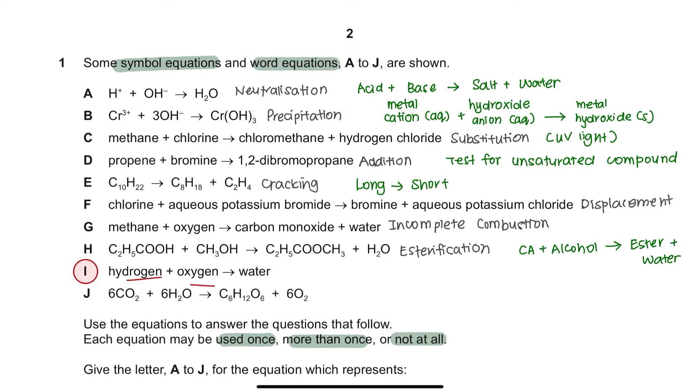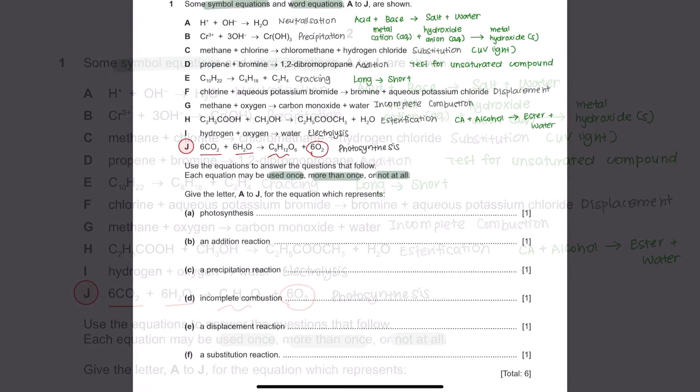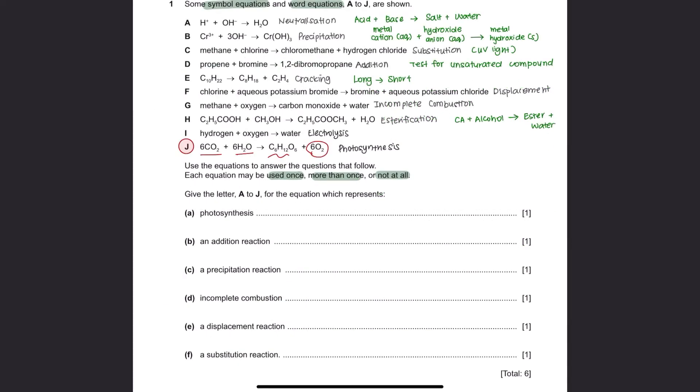Equation I. Hydrogen and oxygen combines together to form water through electrolysis. Equation J. This one should be easy. Carbon dioxide and water converting into glucose and oxygen. This is known as photosynthesis. For the next step, you can just fill in the letter A to J for each of the reaction.